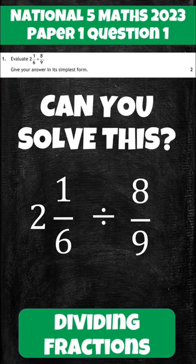National 5 Maths, Track 43, Paper 1, Question 1. Can you solve this? 2 and a sixth divided by 8 ninths. Pause the video here, give it a go.